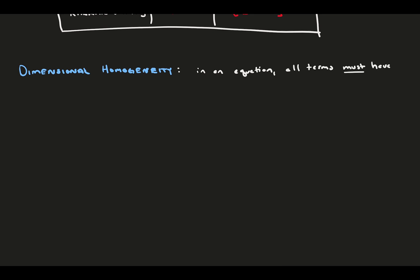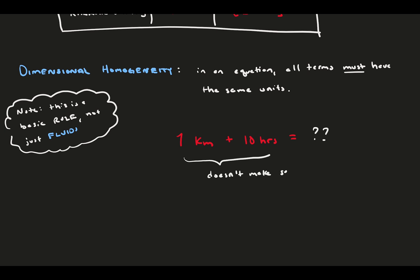The rule states that, in an equation, all terms must have the same units. This isn't just a rule in fluid mechanics. It's a basic rule of science and arithmetic. To show how obvious it is, consider what your answer would be if you were asked to add 10 hours to 1 kilometer. You can't really answer it because it doesn't make any sense. When you add two quantities together to get a third quantity, all those quantities have the same dimension, whether it's hours, kilometers, or kilograms.